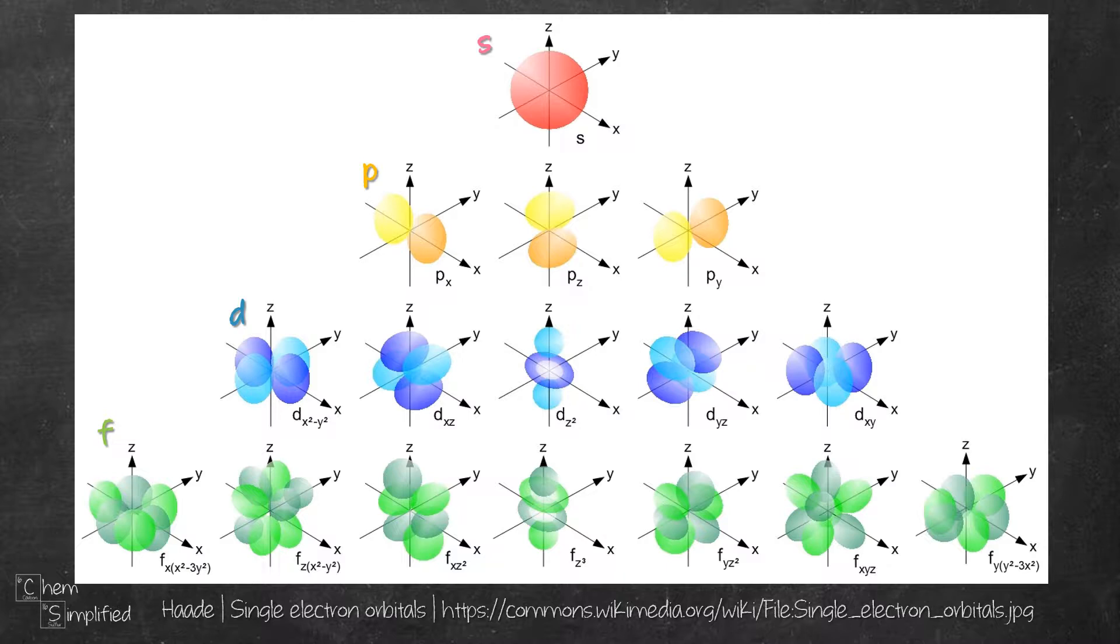In each of these type of orbitals, there are fixed number of electrons that they can hold. Now this is going to matter, so try to keep this in mind. Since each orbital can hold a maximum of two electrons, S can therefore hold two electrons, P can hold six, D can hold ten, whereas F can hold fourteen electrons.